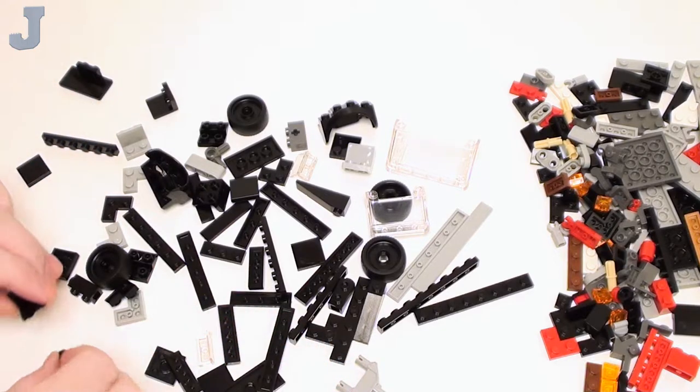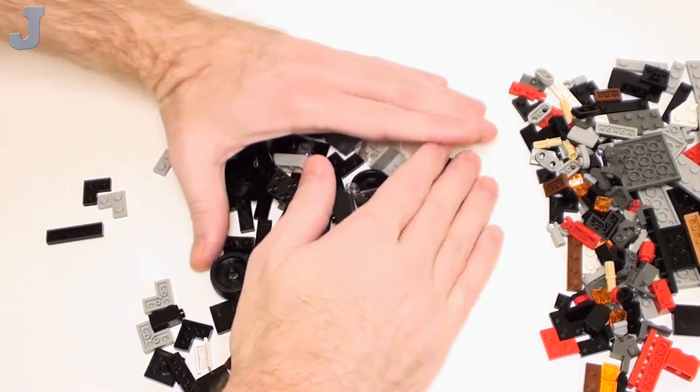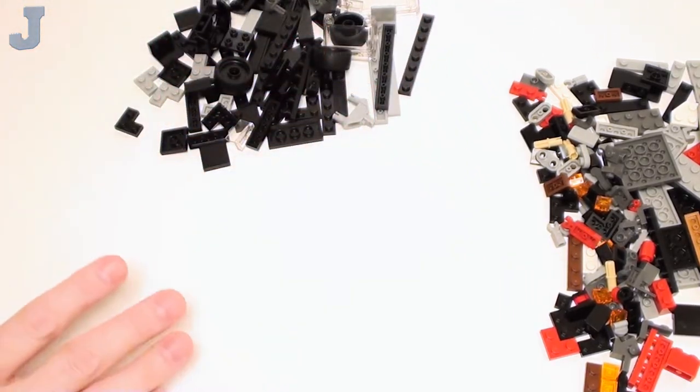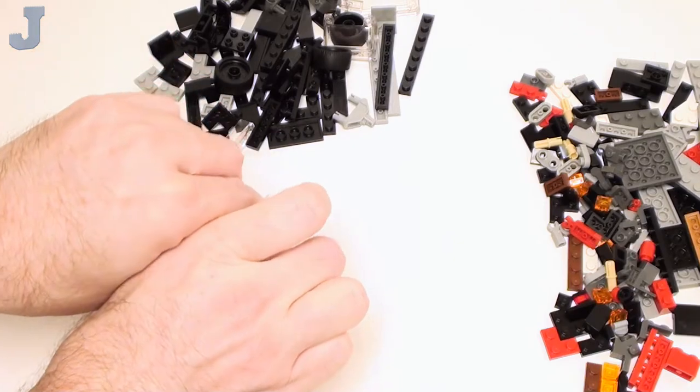Just your garden variety plates. Well you got a 2 by 2 modified plate with two studs. So let me slide that over there. And let's tackle the smaller bags. Oh I see some goodies in this one, let's see what we get in there.